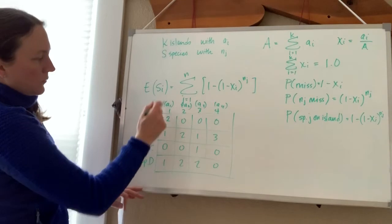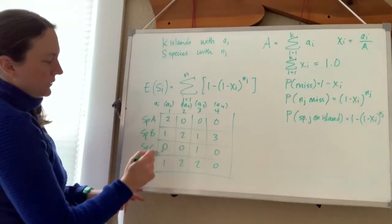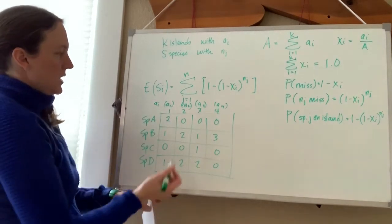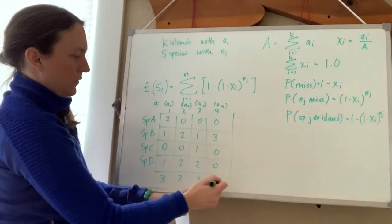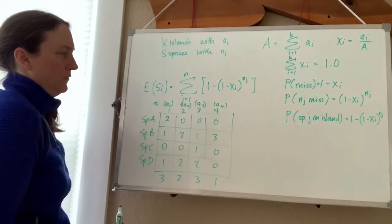On island 1, there would be 1, 2, 3 species, so species richness would be 3. On island 2, species richness would be 2. Island 3 would be 3. And there would only be 1 species on island 4.